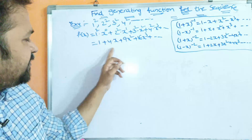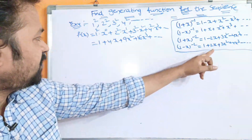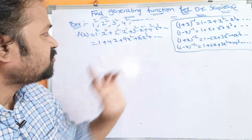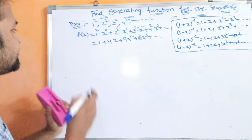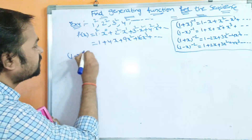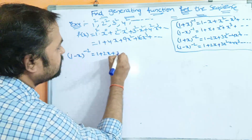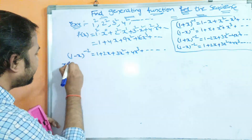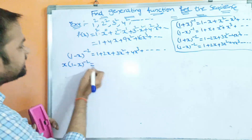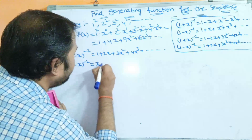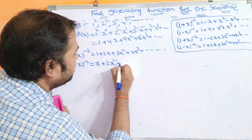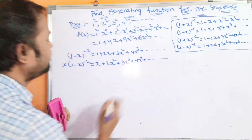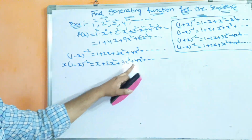To solve this, start from (1-x)^(-2) = 1 + 2x + 3x² + 4x³ + ... and multiply both sides by x to get x·(1-x)^(-2) = x + 2x² + 3x³ + 4x⁴ + ... Then take the derivative d/dx of both sides.